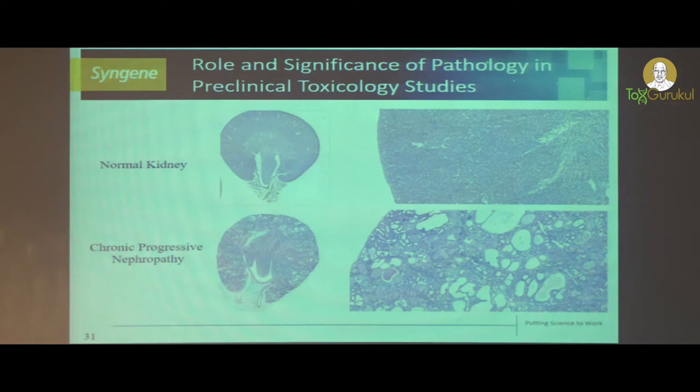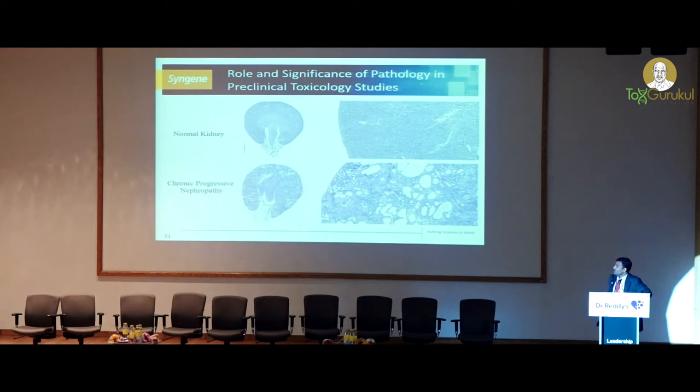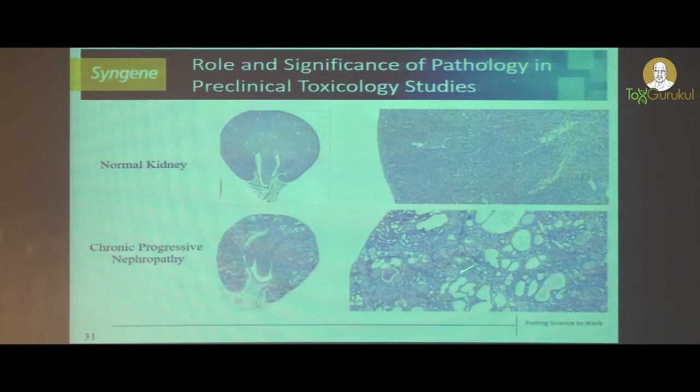One background finding observed in a Sprague-Dawley male rat in a two-year study: this is a normal kidney, and this is a kidney with chronic progressive nephropathy. This is a subgross photomicrograph, and you can very well appreciate the changes here. The kidneys are extensively damaged — the tubules are dilated and filled with protein casts, the interstitium is infiltrated with inflammatory cells, and the glomerulus is almost fibrosed. Yet this animal survived and was sacrificed due to moribund condition.